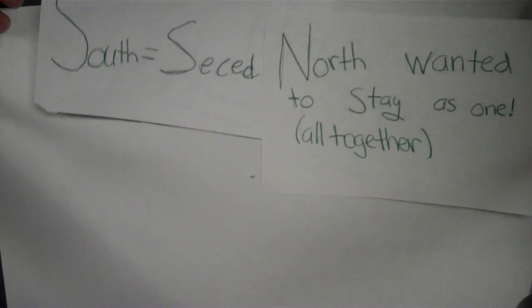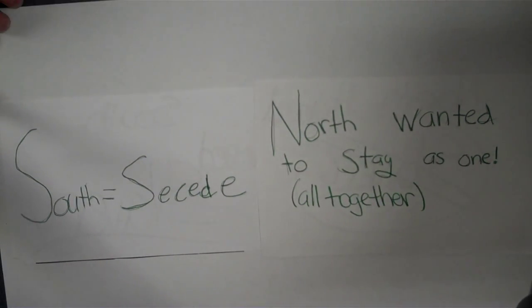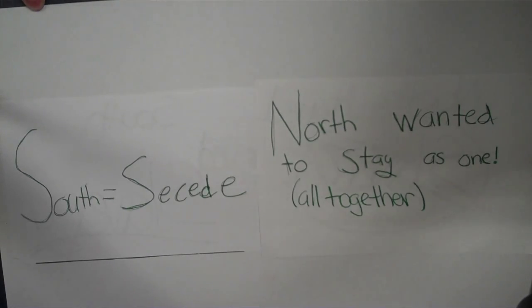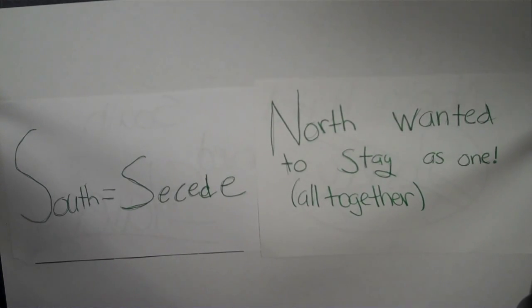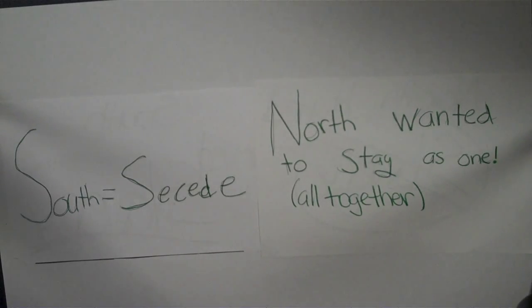The North and South had very different points of view. The South believed that they should be able to keep slaves, and they also felt they were allowed to secede whenever they wanted. The North felt differently — they thought slavery should be abolished and said all men should be treated equally.